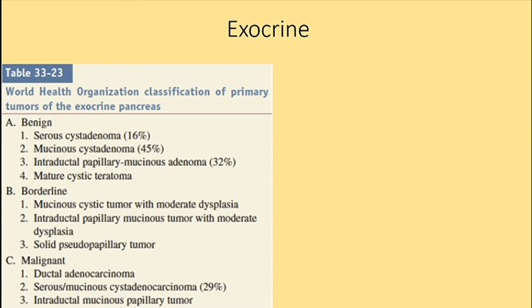Malignant tumors also include intraductal mucinous papillary tumors. Adenocarcinomas are the most common and mainly occur in the head or the uncinate process. There is an adenocarcinoma variant affecting both glandular and squamous cells. Acinar cell carcinoma is usually large — around 10 centimeters — and is not very common.